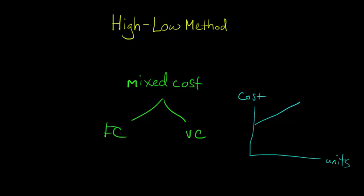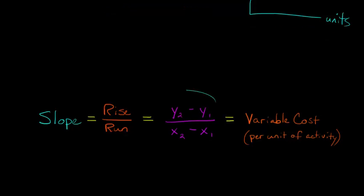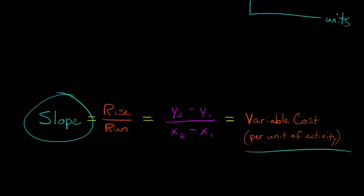Because we have a linear relationship, we can actually just take the slope of this line, and that slope is going to be our variable cost per unit of activity. That's what we're really doing with the high-low method. The way you estimate the slope of a line is rise over run. Just think about it as the change in cost over the change in activity.